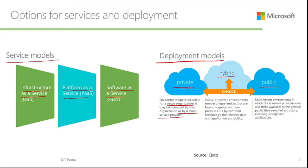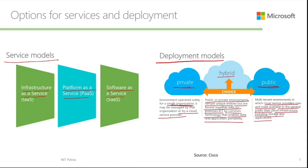Next is hybrid cloud — public or private environments remain unique entities but are bound together with on-premises ICT by common technology that enables data and application portability. Hybrid cloud has both private and public hosting in a single place. For fully public cloud, they are multi-tenant environments in which cloud service providers own and make resources available to the general public, including storage and applications.